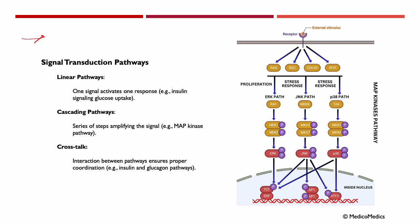Now the message has been received. The second messengers have amplified it. Now, we want to instruct somehow the cell, step by step, to complete whatever it is we want. And that is done through different signal transduction pathways. These function like different instructions, like a recipe. We have linear pathways where one signal activates one response. For example, insulin signaling glucose uptake. We have cascading pathways where there is a series of steps amplifying the signal, like the MAP kinase pathway. We have cross-talk, where there is interaction between pathways, ensuring proper coordination. For example, the insulin and glucagon pathways.